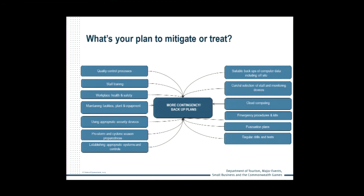Aside from insurance, businesses can also treat risks through developing contingency or backup plans, through quality control processes, staff training, by properly maintaining facilities, plant and equipment, by using security devices, and by establishing evacuation plans and undertaking regular drills and tests.